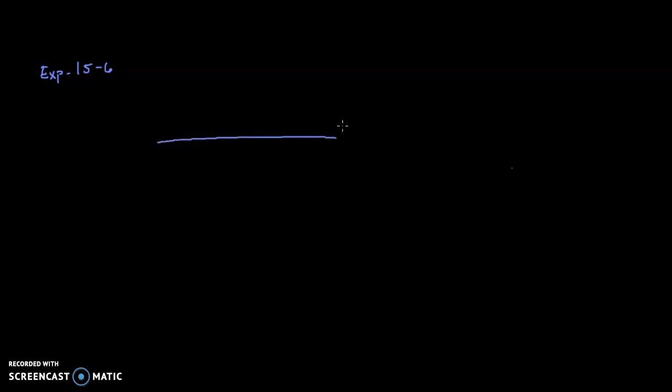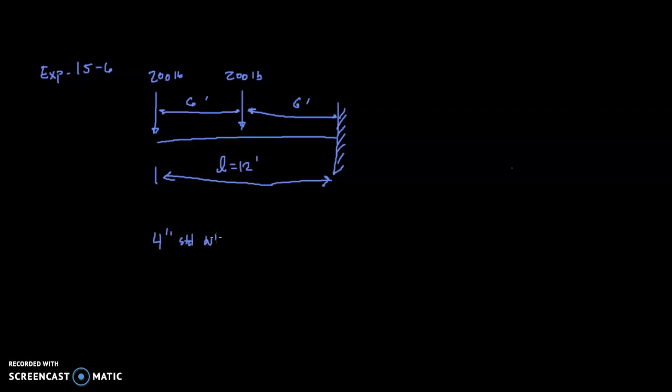In this example we have a cantilevered beam which means it has a fixed support at one end and no support at the other end. There is a point load applied at the end and another point load applied at mid-span. Each of them have a magnitude of 200 pounds, and the distance between these two is six feet and the distance between this load and the support is another six feet. So the overall span length is 12 feet. We're also told in the problem statement that we may omit the self-weight of the beam and we are told that the beam is a four inch standard weight steel pipe.